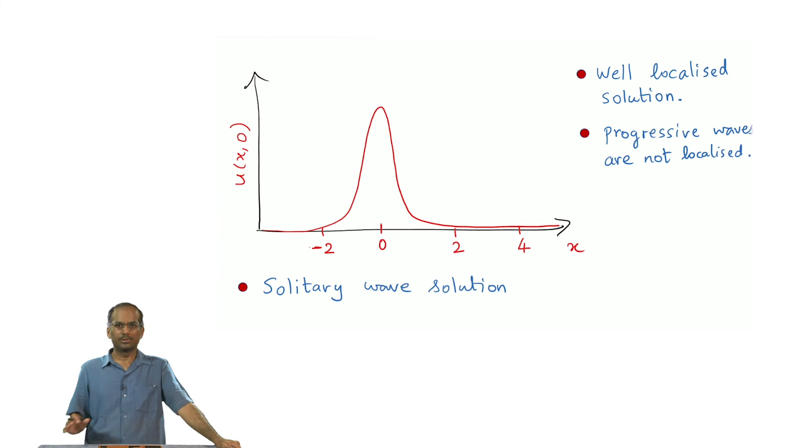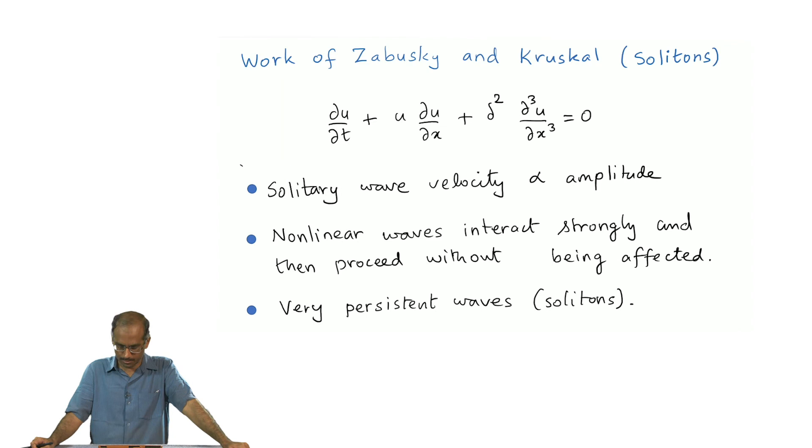Another important theoretical development was due to Korteweg-de Vries. It is called the KDV equation. Here is the non-linear equation itself: ∂u/∂t + 6u(∂u/∂x) + ∂³u/∂x³ = 0. You will see that the nonlinearity principally comes from this term here, the product of u and ∂u/∂x. Otherwise if this term were absent it is pretty much a linear partial differential equation. One possible solution of this non-linear equation is again a secant hyperbolic square function. Again the important thing to note is that the velocity c is proportional to amplitude. This is a solitary wave solution, a very well localized solution, unlike the progressive wave which extends from minus infinity to plus infinity.